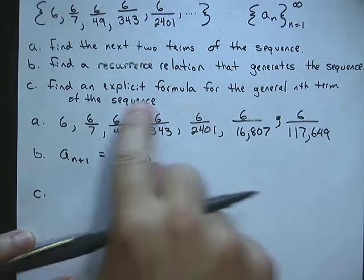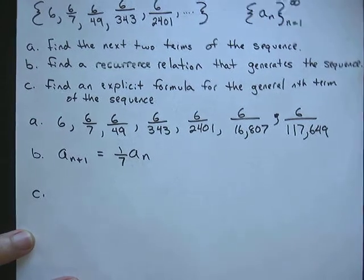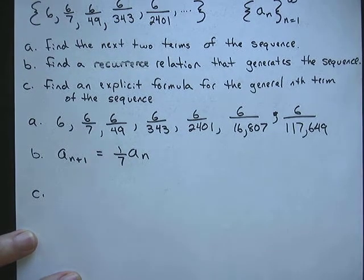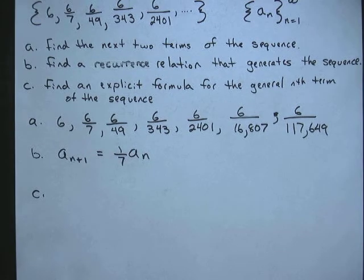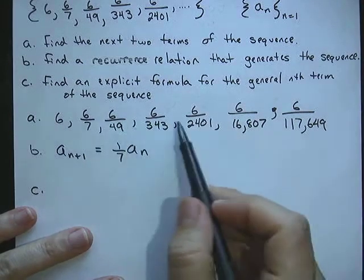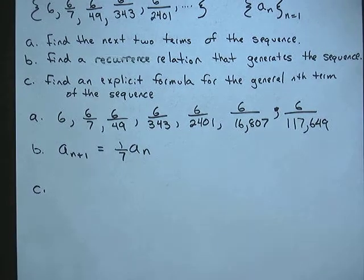And then C, find an explicit formula for the general nth term of the sequence. So explicit formula, we need to be able to, say, find the 100th term immediately without having to find 1st, 2nd, 3rd, 4th, 5th, and so on and so forth. We need to be able to say, what's our 100th term? What's our 1,000th term? So we need a formula that we can just plug in a 100 into to get the 100th term.